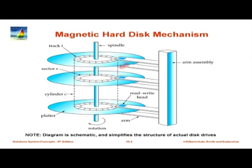Some terminology: a track is a complete circle; a sector is a piece of it. A cylinder is all the tracks which are one above the other on different platters, because they can all be read without moving the disk arm. The disk can choose which read-write head to use — top, next, and so on — but you do not have to move the arm assembly. That is a physical characteristic.